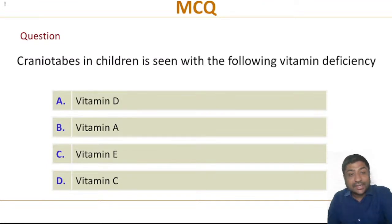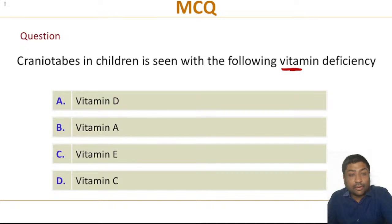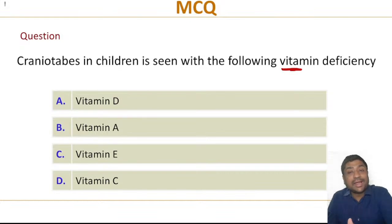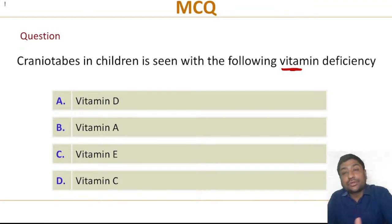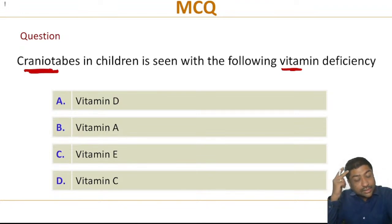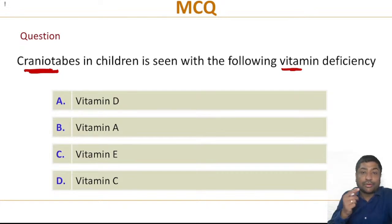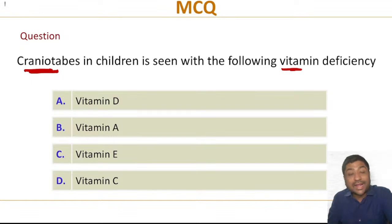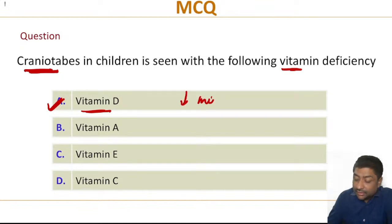Next question: Craniotabes in children is seen with deficiency of which vitamin? Option A: Vitamin B; Option B: Vitamin A; Option C: Vitamin E; Option D: Vitamin C. Actually, the answer is Vitamin D. Craniotabes occurs when a newborn's skull bones, which are normally soft and pliable and mineralize by six to eight months, remain soft and pliable like a ping-pong ball beyond 12 to 24 months. This is primarily due to Vitamin D deficiency, which decreases mineralization of the bone.